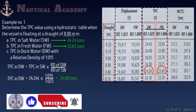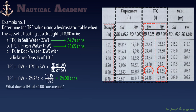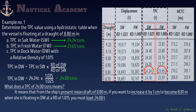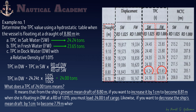The difference between the TPC of salt water and dock water is 0.24 tons, about 240 kilograms. A TPC of 24.0 tons means that from the ship's present mean draft of 8.80 meters, if you want to increase it by 1 centimeter to become 8.81 meters when floating in dock water at relative density 1.015, you must load 24 tons. Likewise, to decrease the draft by 1 centimeter, you must discharge 24 tons of cargo.